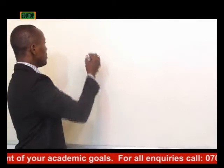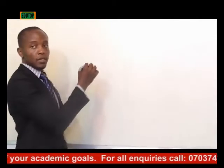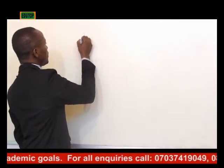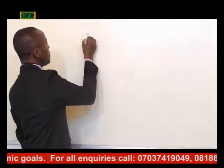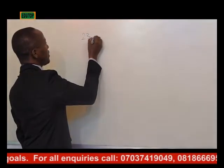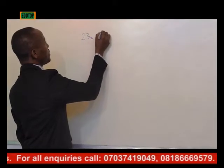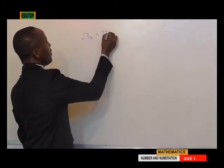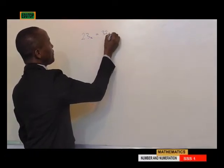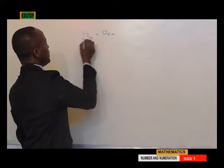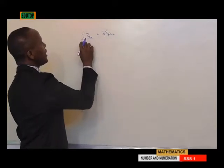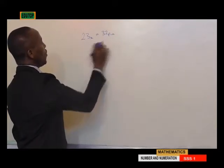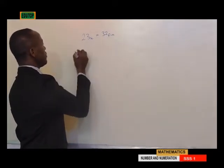So that can be done. That will be 23 base x. 23 base x is equal to 32 base 5. These are the left hand side and these are the right hand side. We equate them.